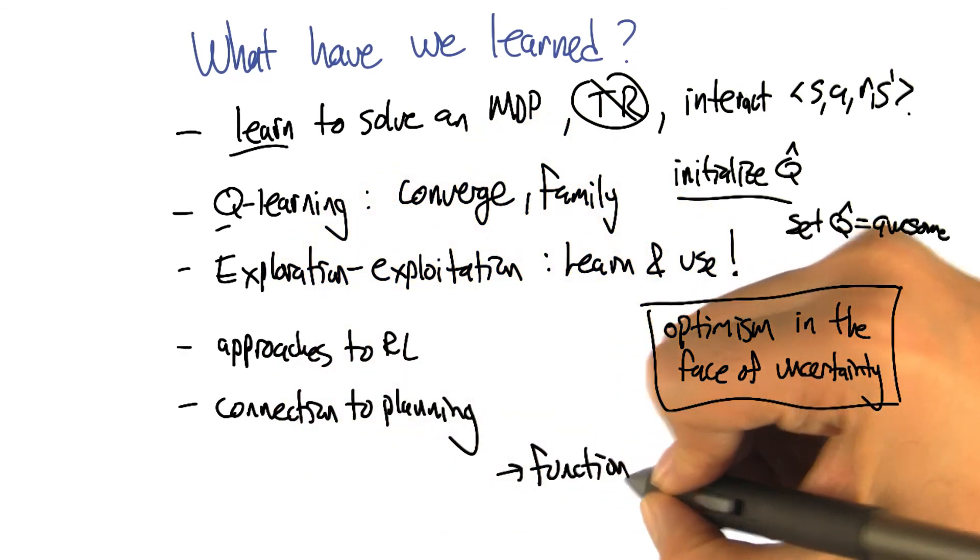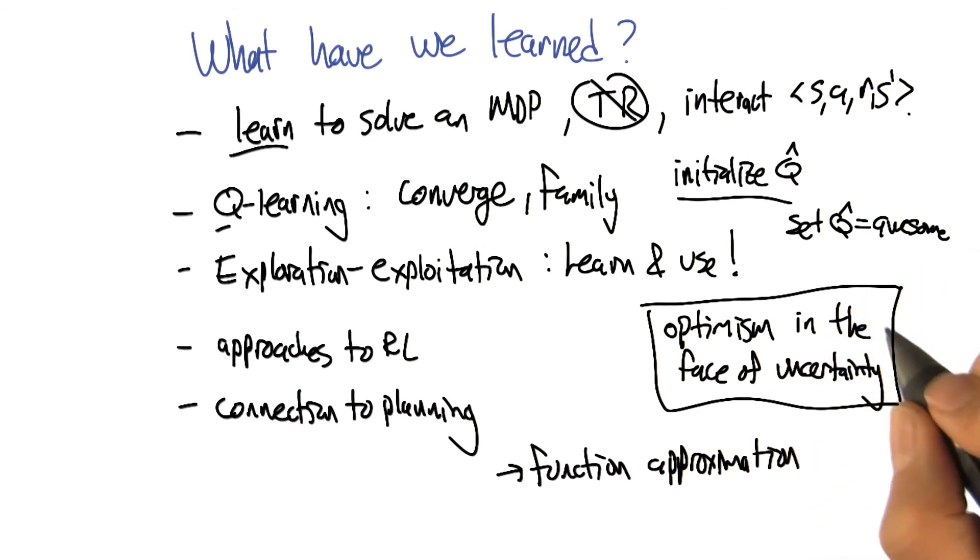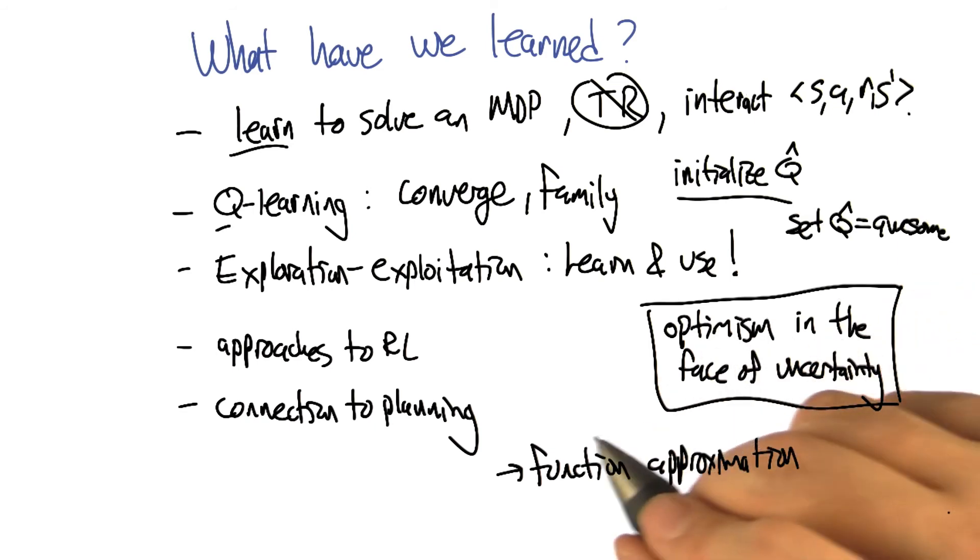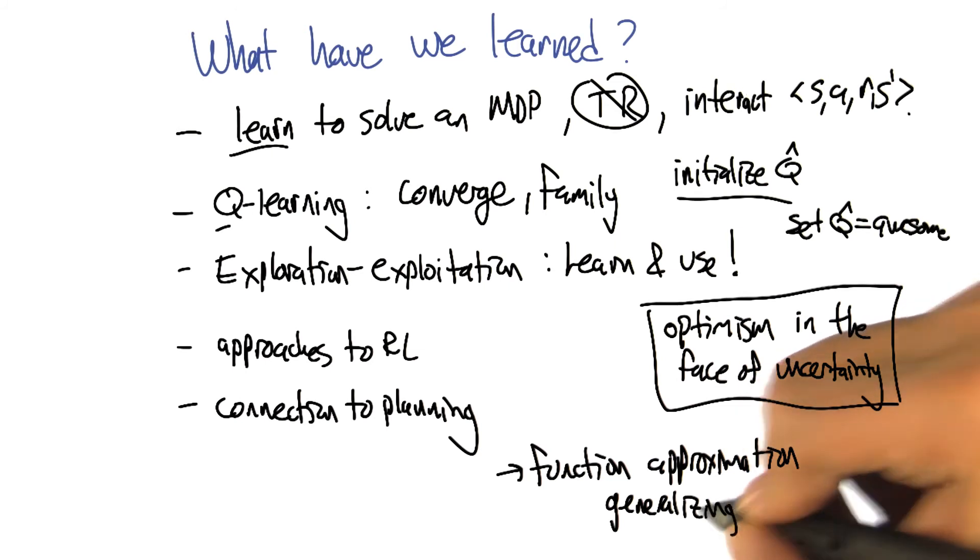One thing we didn't talk about is connecting to function approximation and the issues in machine learning that are really important, things like overfitting. They come up in the reinforcement learning setting, but not in this simplified setting that we're looking at here where we learn a separate value for each state-action pair. We're going to have to start generalizing to see the importance of that, and we're going to do that in a later lesson.